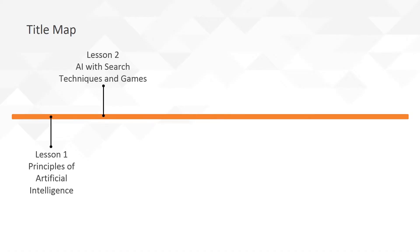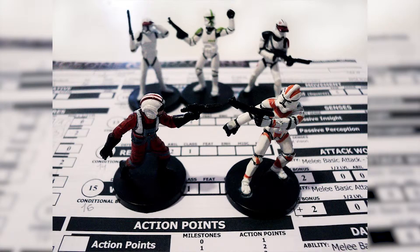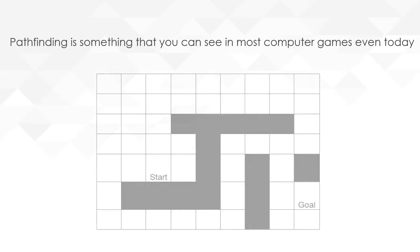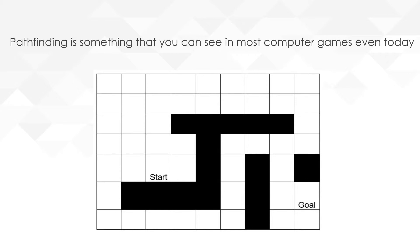We are laying down the foundations for lesson two, which is about game AI. We learn how to master two-player games, and we also learn how to solve pathfinding problems with the A* (ASTAR) algorithm. Pathfinding is something you can see in most computer games even today — for instance, Starcraft or Dota games are all about pathfinding on some level. When you click with your mouse, your character needs to move to a certain place, and we will learn the exact algorithm that is implemented and optimized in some of these games.